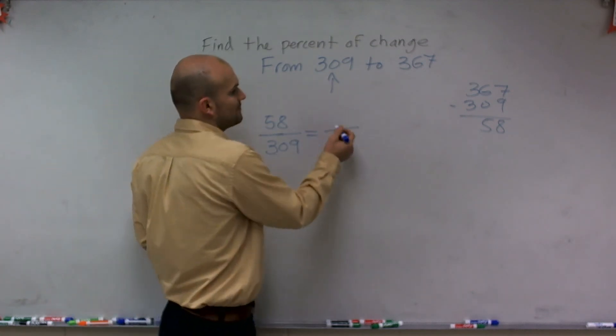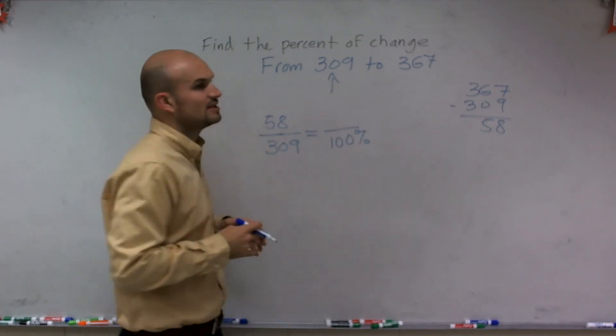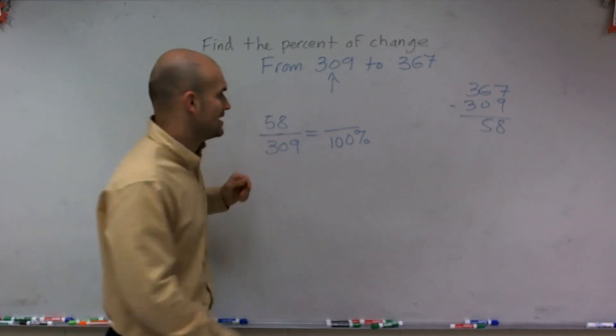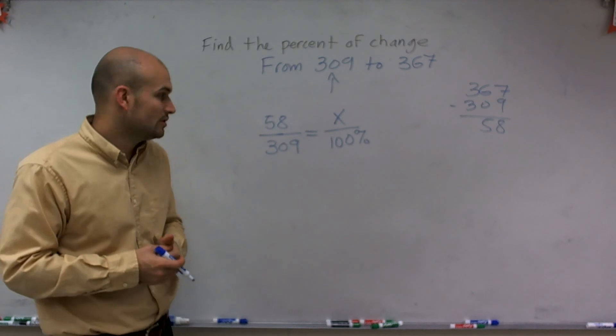So therefore, I want to be able to figure out if I have 100% here, what is going to be the percent that would be equal to this 58 change out of 309? So what we're going to write is an x percent here. That's the value that we're looking for.